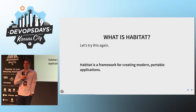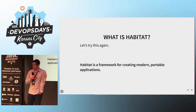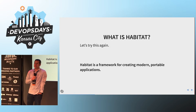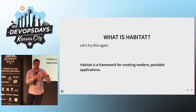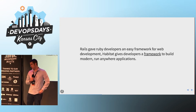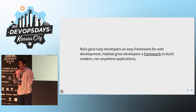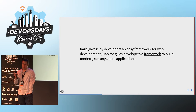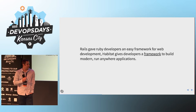So for me, this is the way I am thinking about Habitat now. Habitat is a framework for creating modern portable applications — not necessarily a new infrastructure where you go and set up a cluster of something. Just like Rails gave Ruby developers an easy framework for web development, Habitat is giving developers a framework to build modern run-anywhere type applications.